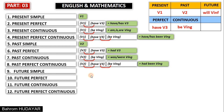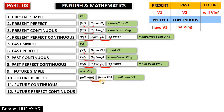Future simple: will + verb infinitive is the main formula. Future perfect: future = will + verb infinitive, perfect = have + verb three. Multiply verb infinitive with have — the infinitive form of have is have. The result is will + have + verb three, and this is the formula of future perfect. Future continuous: will + verb infinitive and be + verb-ing. The infinitive form of be is be. The result will be will + be + verb-ing.